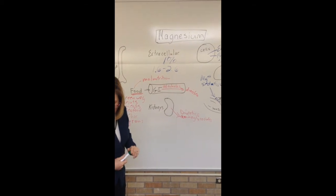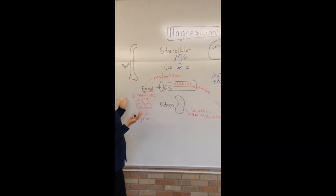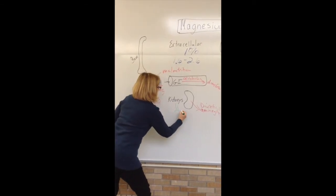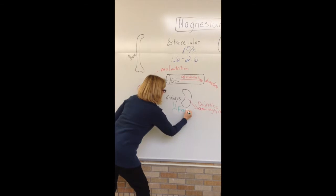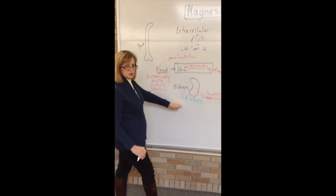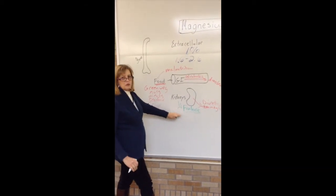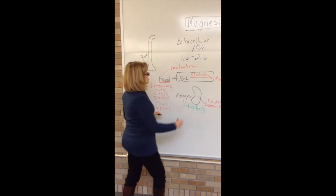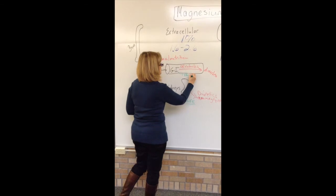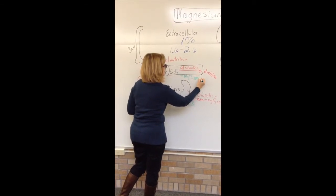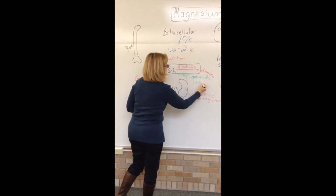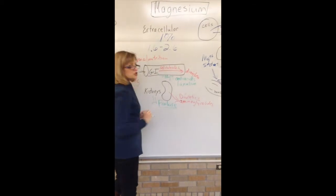Now let's talk about what would cause us to have too much magnesium in our system. The big one would be renal failure — if we aren't putting anything out but we're always taking magnesium in, we're going to keep it in. There are also some drugs that have magnesium added to them — often antacids and some laxatives that contain magnesium.